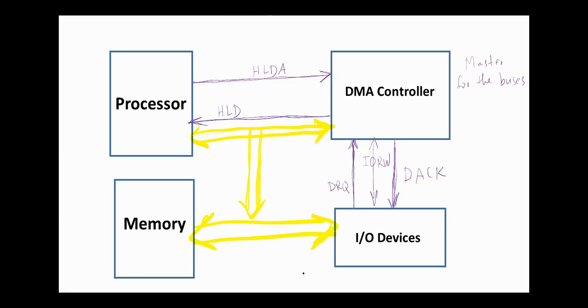When the data transfer is completed, the DMA interrupts the processor to inform it that the task is finished and the processor can take control over the bus again and resume its work.